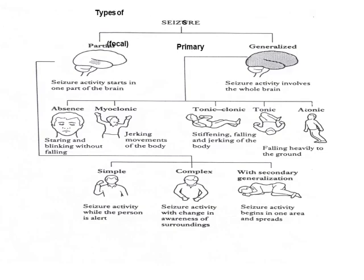Simple seizures involve seizure activity while the person is alert, with jerking of only one part of the body. Complex seizures involve seizure activity with a change in awareness of surroundings. Secondary generalization means seizure activity begins in one area and then spreads.